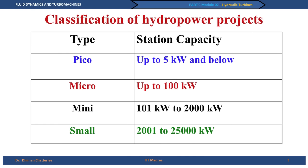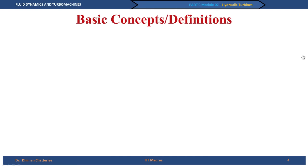This is the classification we normally use. For these larger power stations, we really have the dams and turbines we are going to talk about. Some basic concepts to be clear on at the very beginning: in case of a pump, we talked about the head developed by the pump; here we are talking about what is the head utilized by the turbine.